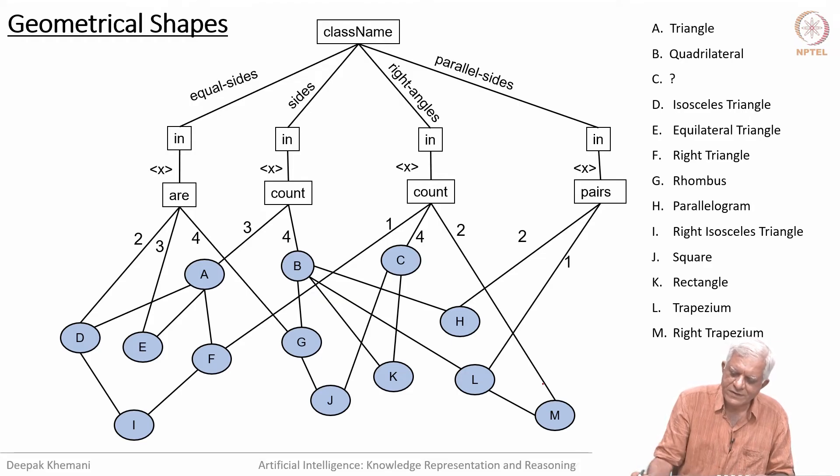Here is another one on geometrical shapes. Earlier we talked about blocks, but now we are talking about two-dimensional figures. There is a whole list of figures you can see on the right-hand side: the triangle, the quadrilateral, the isosceles triangle, the right triangle—a right angle triangle which is a right angle.